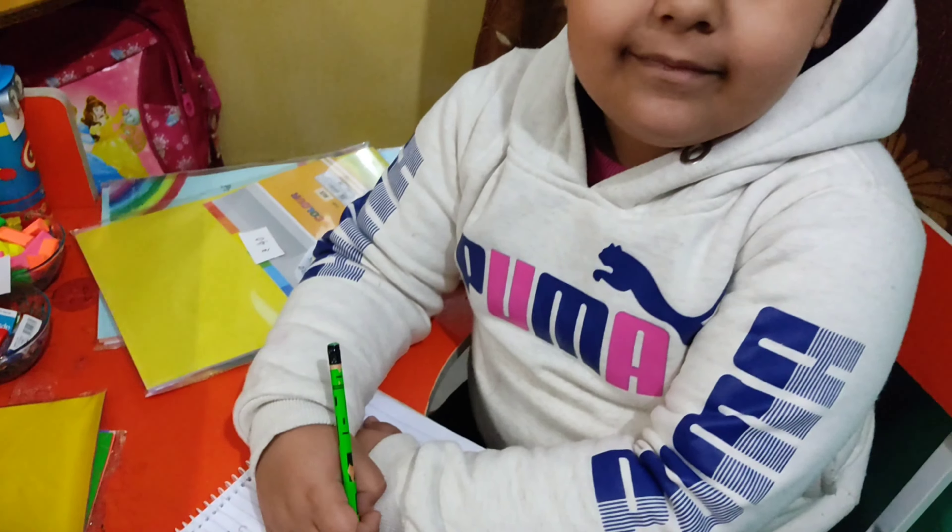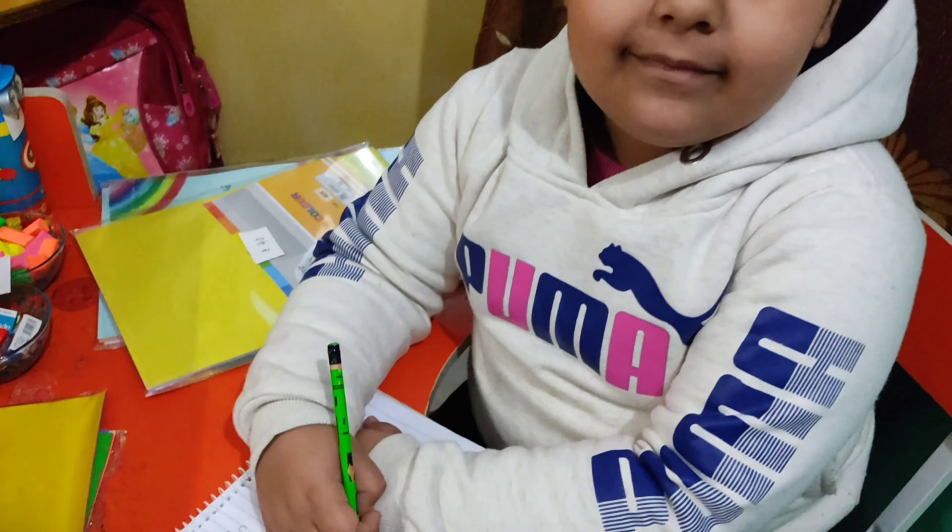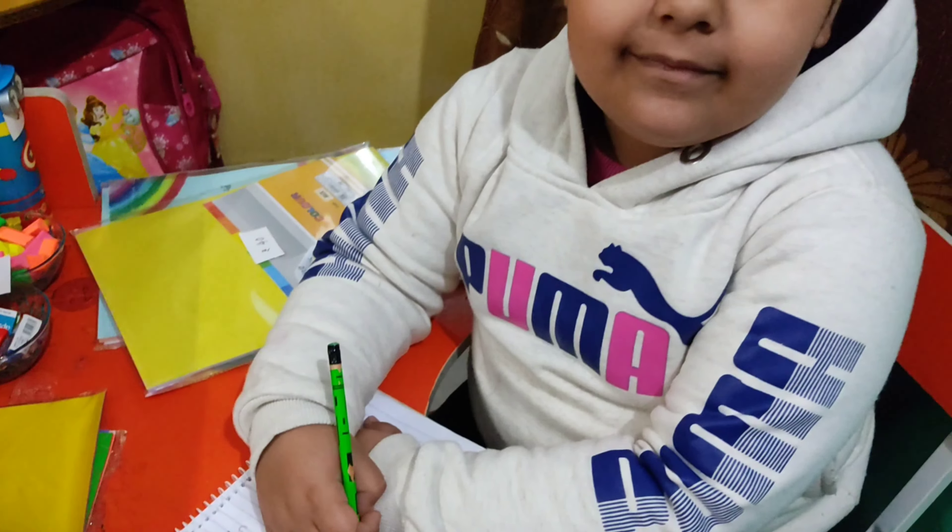Tell me the price. The price of one pencil is Rs. 5, the color pencils are Rs. 50, the eraser and sharpener are Rs. 5 each, and the color sheets are Rs. 40.